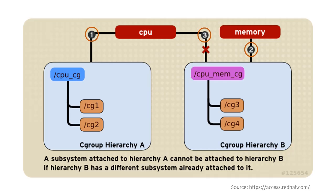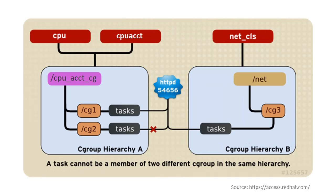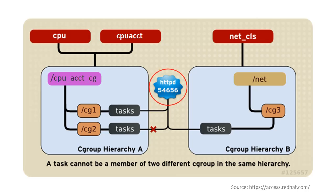For any single hierarchy you create, each task on the system can be a member of exactly one cgroup in that hierarchy. A single task can be in multiple cgroups, as long as each of those cgroups is in a different hierarchy. As soon as a task becomes a member of a second cgroup in the same hierarchy, it is removed from the first cgroup in that hierarchy. For example, if HTTPD is a member of node CG1, it cannot be present in CG2 as both nodes are in the same hierarchy, as this would create ambiguity during resource allocation.